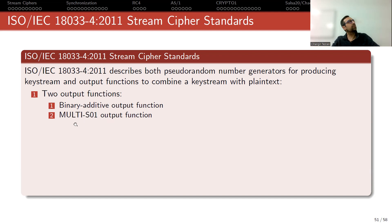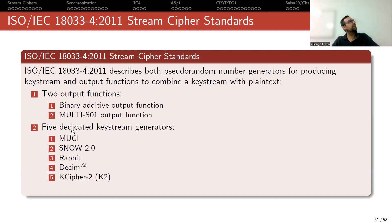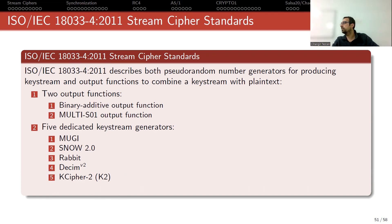That covers the output functions. For keystream generation, there are five dedicated keystream generators: Moogie, Snow, Rabbit, Desim, and KCypher-2. These are in the ISO standard, but at the NIST site these are not standards.